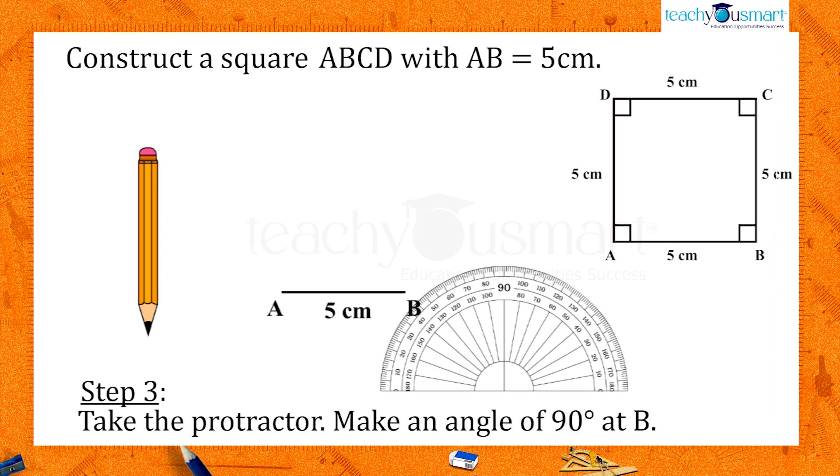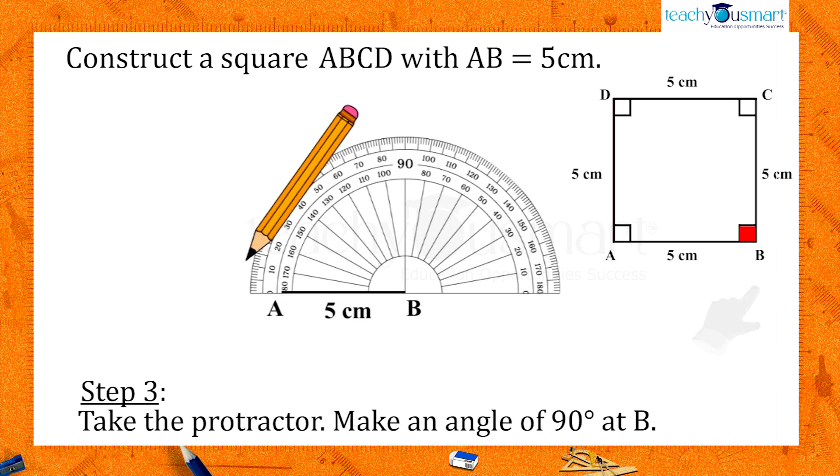Take a protractor and make an angle 90 degrees at the vertex B.